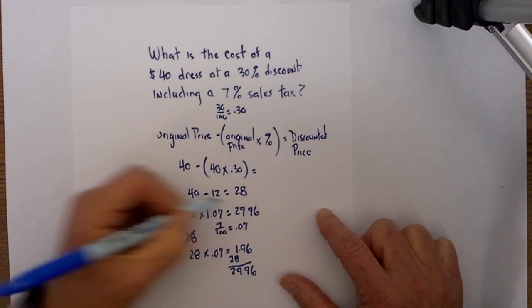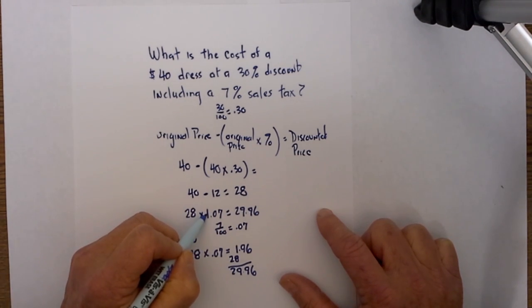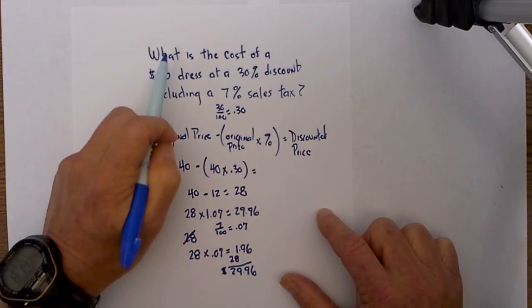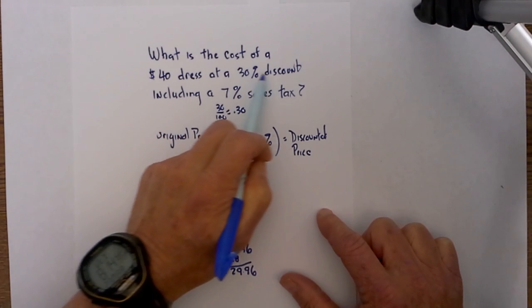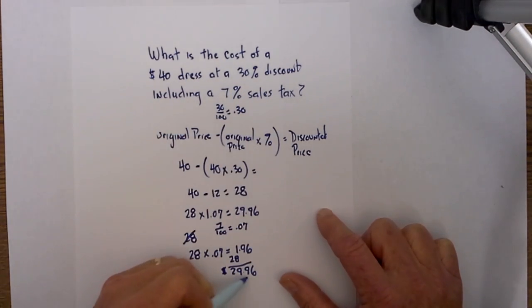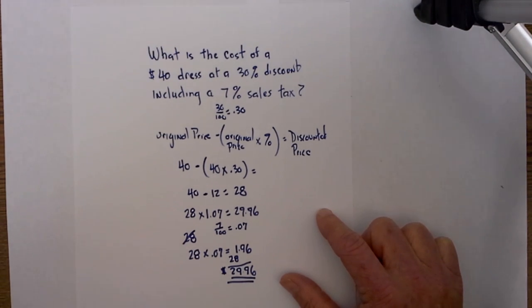If you notice, it's the same number as if I just multiplied it by 1.07. So bottom line, to answer the question: What is the cost of a $40 dress at a 30% discount including a 7% sales tax? It will be $29.96.